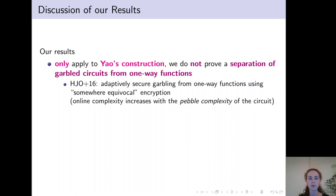In fact, Hemenway et al. gave a construction of adaptively secure garbling from one-way functions using somewhere equivocal encryption. However, this scheme is less efficient than Yao's scheme, since its online complexity increases with the pebble complexity of the circuit.